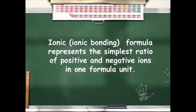If the compound is ionic, the chemical formula represents what is called one formula unit of the compound. Only covalent bonding produces molecules — an ionic bond doesn't produce a molecule. A formula unit simply means the simplest ratio of an ionic compound's positive ions and its negative ions.